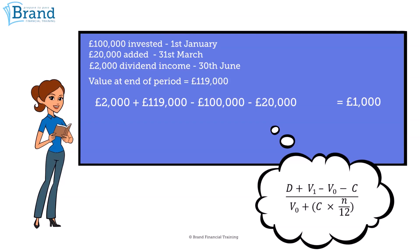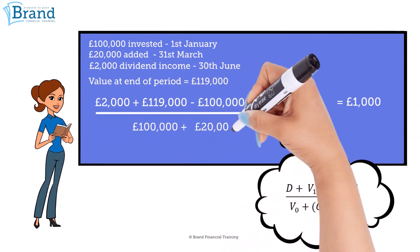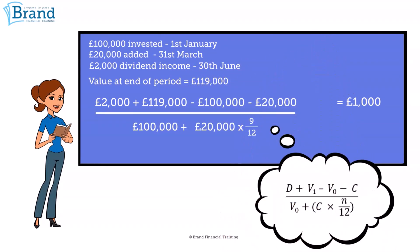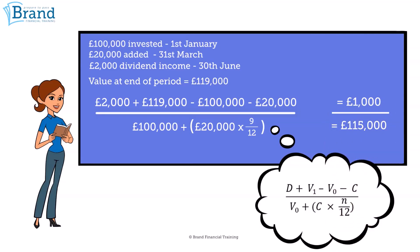On the bottom line, we have a hundred thousand pounds — the value at the start of the year — plus the sum of twenty thousand pounds, which was the money invested at the end of March, multiplied by 9 over 12. The nine represents the number of months remaining in the year, so April to December. This gives us a bottom line figure of one hundred and fifteen thousand pounds.